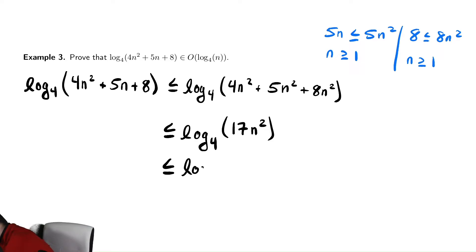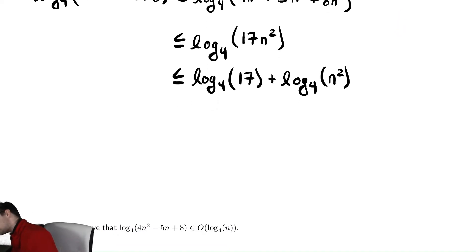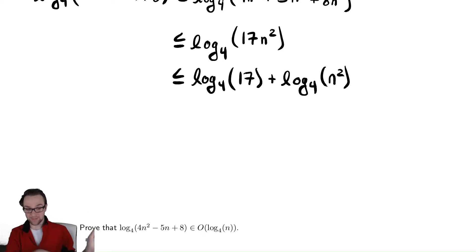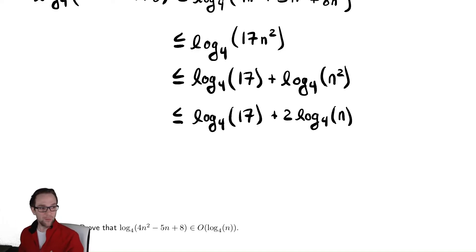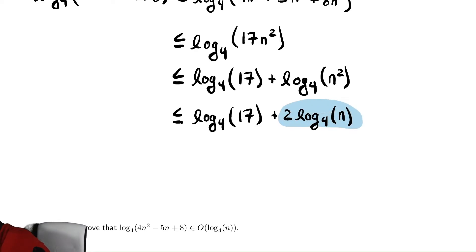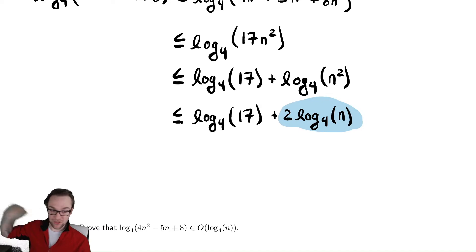I'm going to use log rules to split that log into two different logs: log base 4 of 17 plus log base 4 of n squared. Now I'll use another log property — the main property for logs — which is how to deal with exponents inside a log: you can bring the exponent outside as multiplication. So this is less than or equal to log base 4 of 17 plus 2 times log base 4 of n. We're almost there — we're trying to show this is less than or equal to a number times log of n, and that second term looks like a number times log of n.